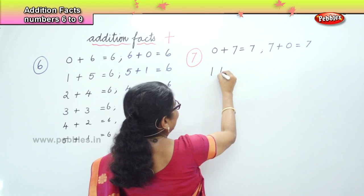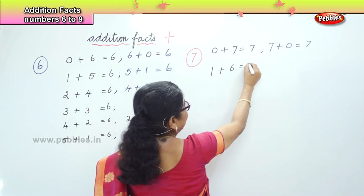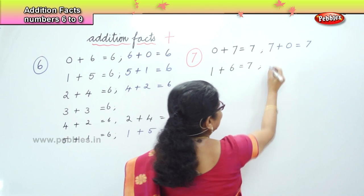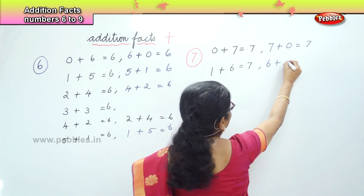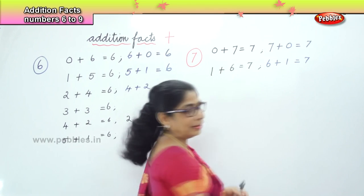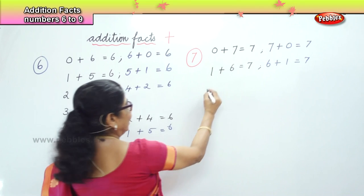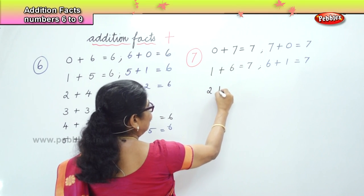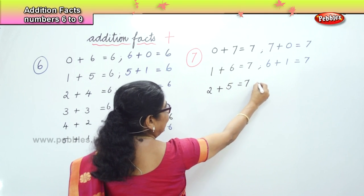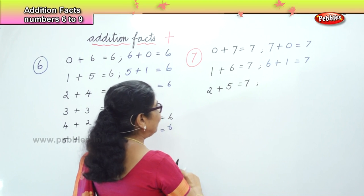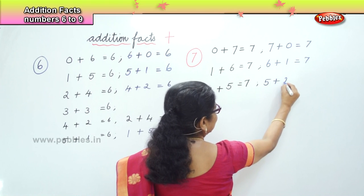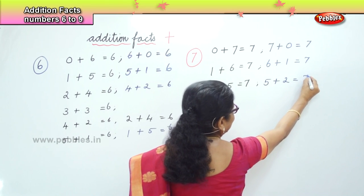Next: 1 plus 6 equal to 7. Then 6 plus 1 equal to 7. What's next? 2. Next is 2 plus 5, equal to 7. And the reverse: 5 plus 2 equal to 7.